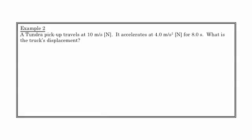The Toyota Tundra pickup truck travels at 10 meters per second north. It accelerates at 4 meters per second squared north for 8 seconds. What's the truck's displacement? We're given v₁ at 10 m/s north, acceleration, and time. We're asked to find displacement after 8 seconds. So we've got v₁, a, t, and d.